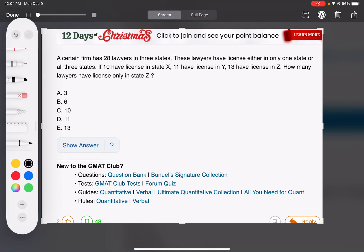Okay, so the equation I'm going to use here is three group overlap. The total equals A plus B plus C minus the number in two groups, exactly two groups, that is minus two times the number in all three groups plus the number in none.